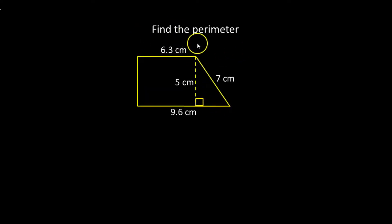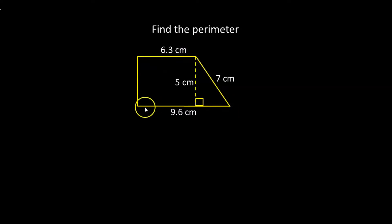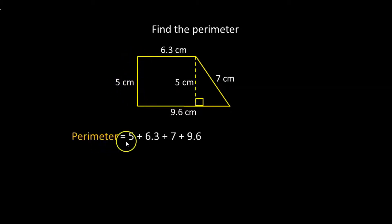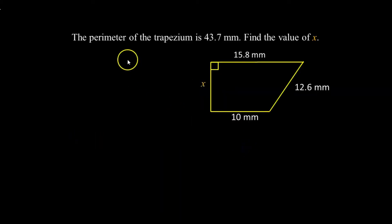Find the perimeter. This side is 6.3, this is 7, this is 9.6, but this one is not given. If you look at the height, this height is the same as this side, so this side is also 5 centimeters. So the perimeter is equal to 27.9 centimeters. The perimeter of the trapezium is 43.7 millimeters.